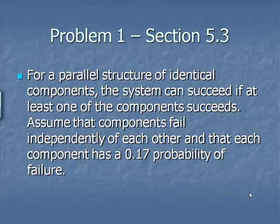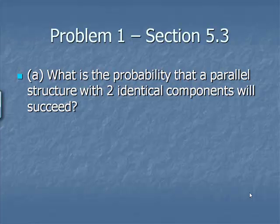Problem 1. For a parallel structure of identical components, the system can succeed if at least one of the components succeeds. Assume that the components fail independently of each other, and that each component has a 0.17 probability of failure.